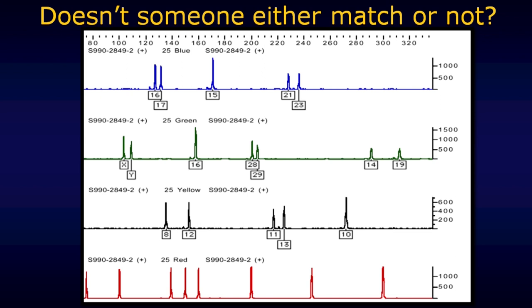Let's get right to work and start talking about DNA profiling. This first slide is one that's shown up in a number of videos in this series. This particular one is a DNA profile as it shows up for a reference sample. As is the case with some DNA testing results, they're very easy to interpret, in some sense very black and white. There's no question here as to whether or not there is a 16 or a 17 peak at the first locus in the blue.